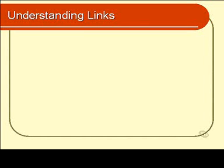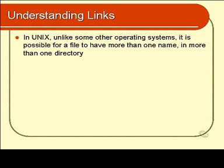In UNIX we have the concept of a link. It's reasonably important that you understand what a link actually is, because they're extremely useful entities and there aren't that many operating systems out there that actually support links. It's unlikely that you would have seen a link before if you're not familiar with UNIX. In UNIX it is possible for a given file to have more than one name, and the various names that a file has can be scattered around in various directories.